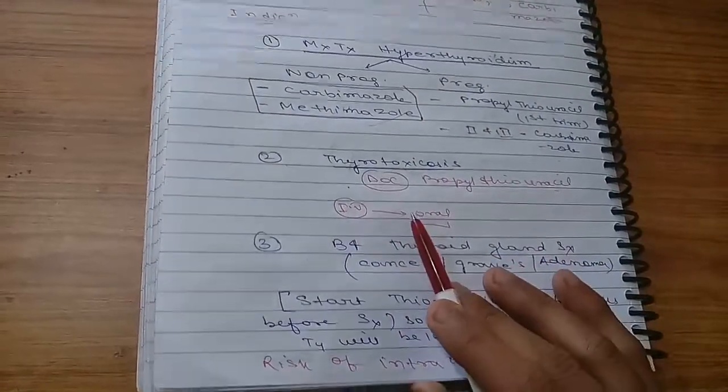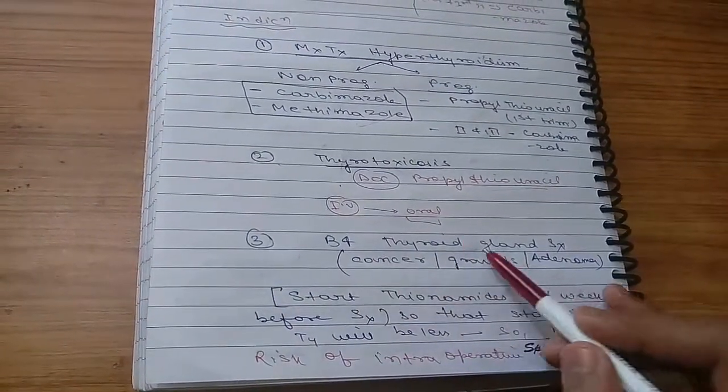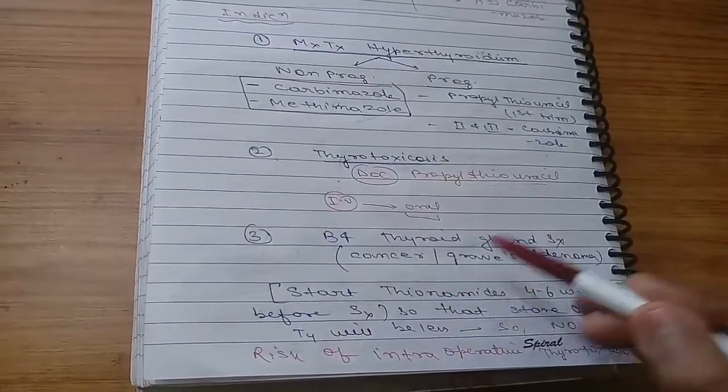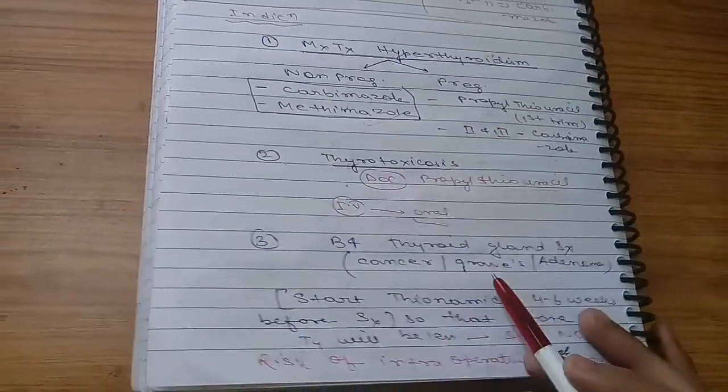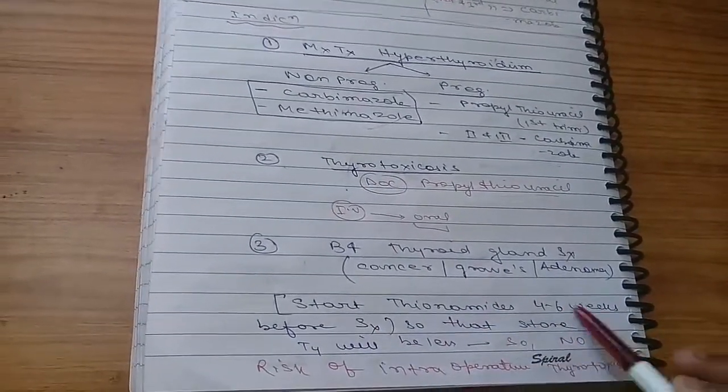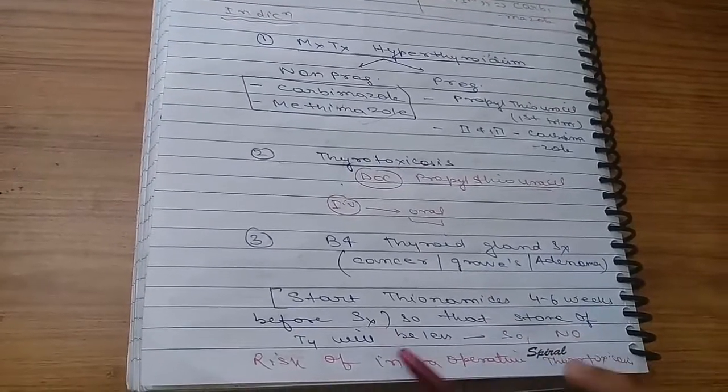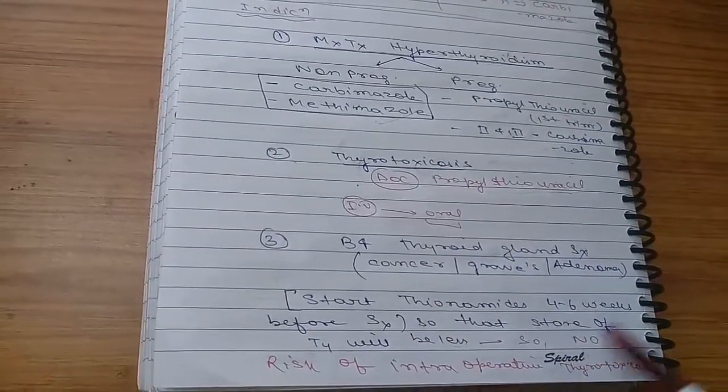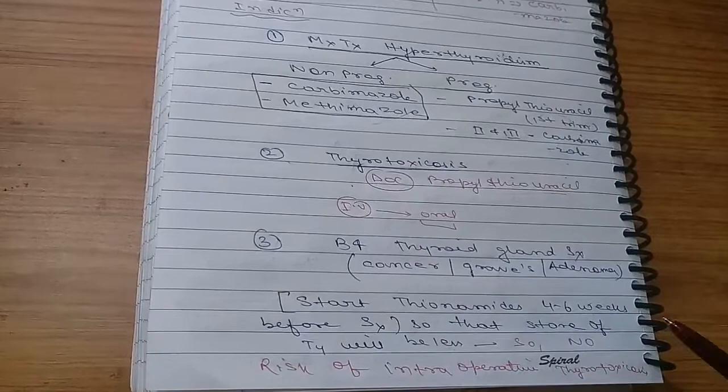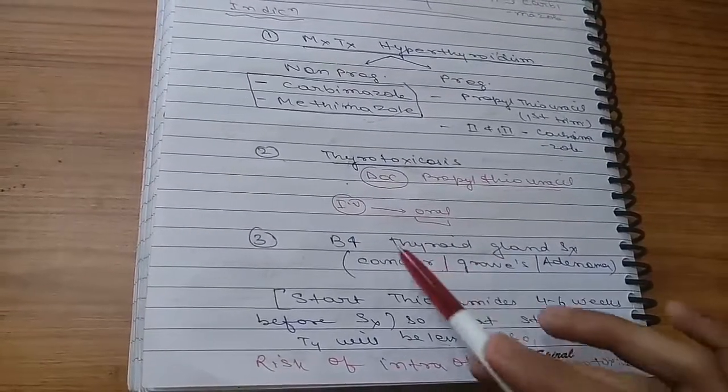Before thyroid gland surgery, you should also give this drug. You start thionamide 4 to 6 weeks before surgery so that the store of T4 will be less, so there will be no risk of intraoperative thyrotoxicosis.